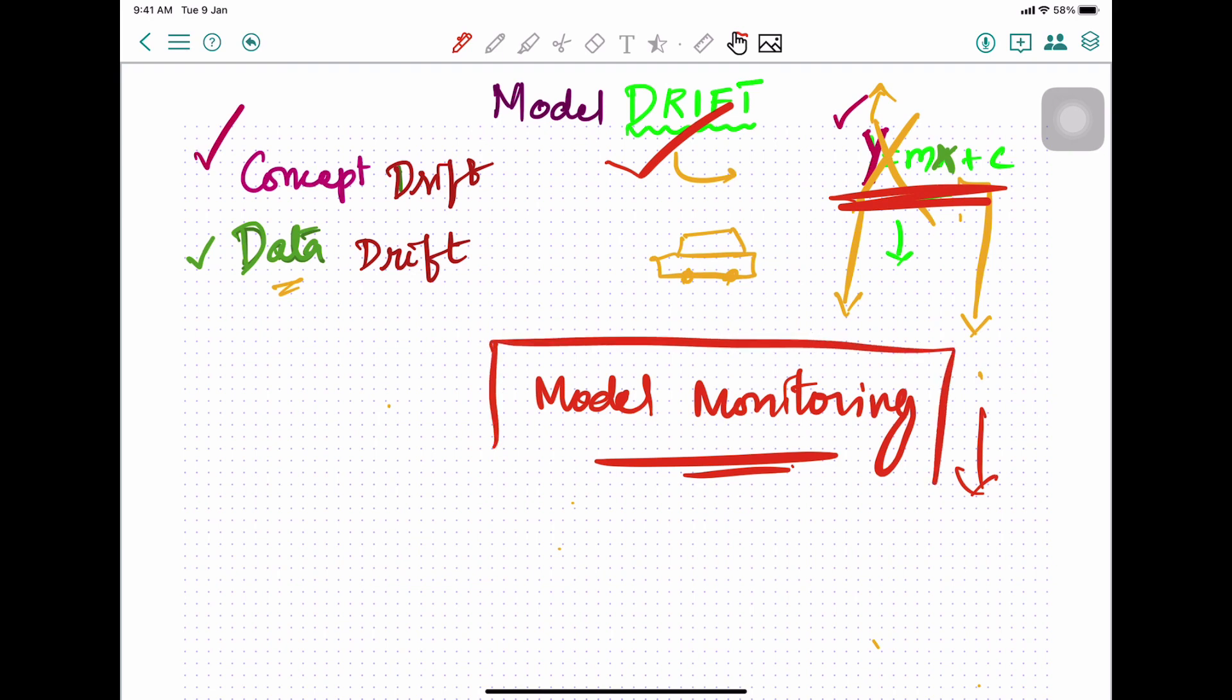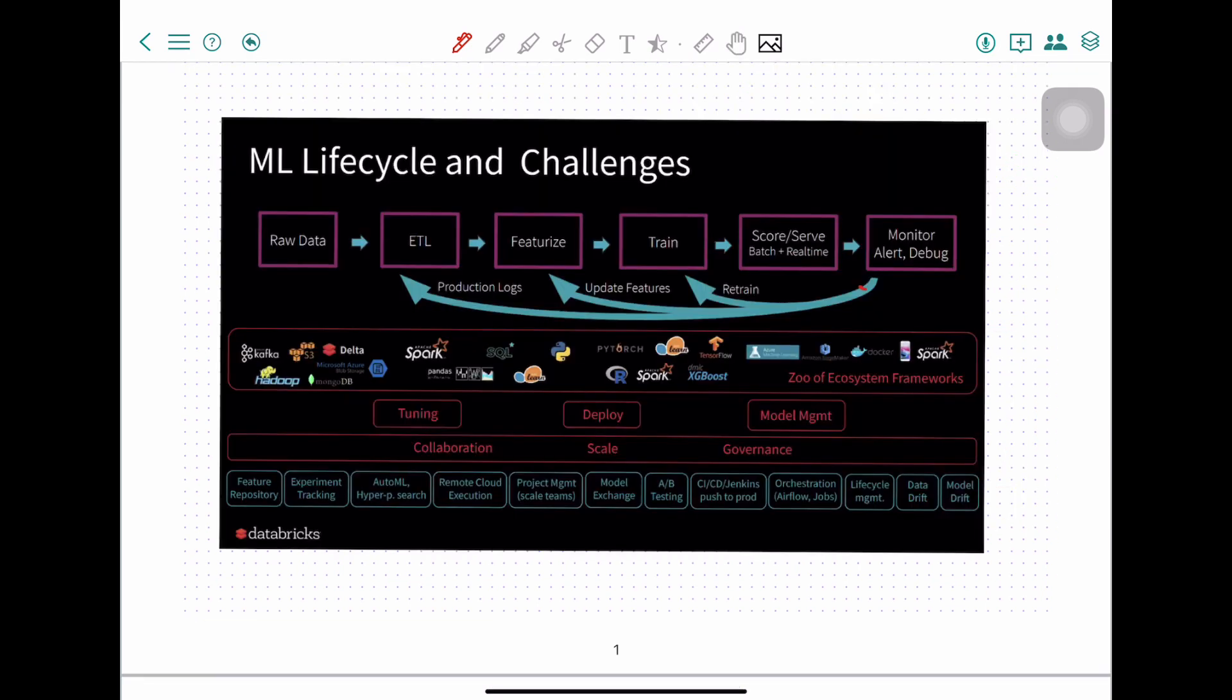All these things happen when you have a consumer-facing product where consumers are quite outspoken. But if not, then the best way is to do model monitoring. You can do model monitoring in a lot of different ways, but there are some tools that help you monitor the model and understand how much your model is drifting. If you see this ML lifecycle by Databricks, you can actually see that there is a component at the end which is primarily to monitor the model.